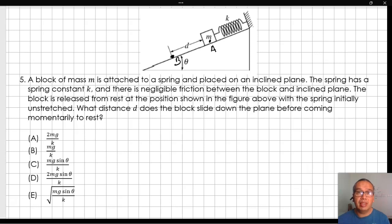The block travels a distance d down the plane. Therefore, its change in height is d sine of angle theta. At the beginning of the process, the block has only gravitational potential energy, and elastic potential energy at the end.